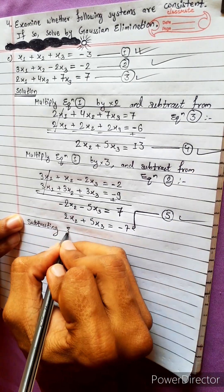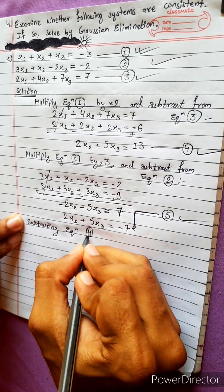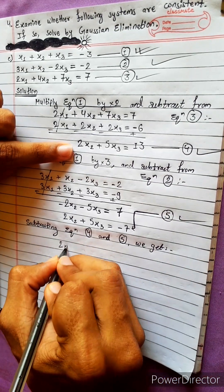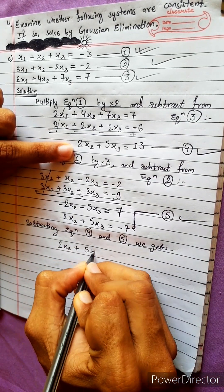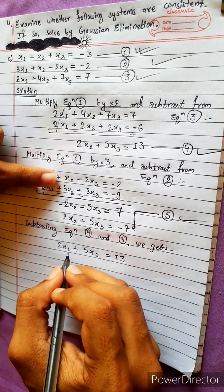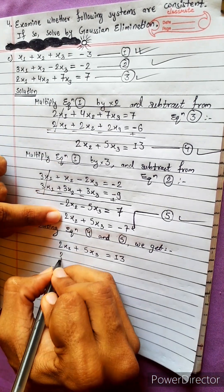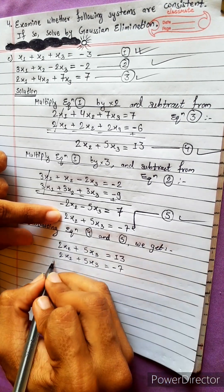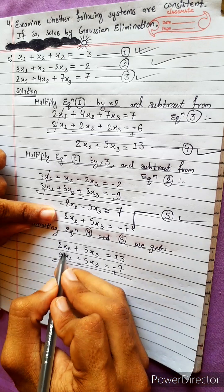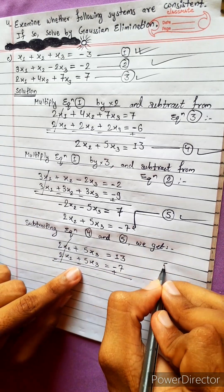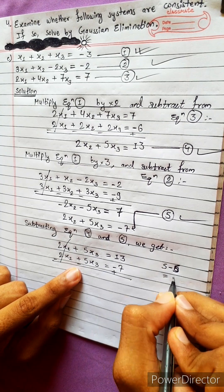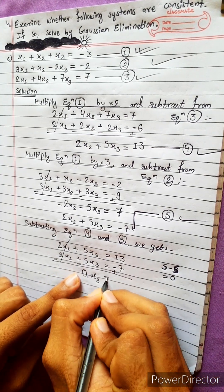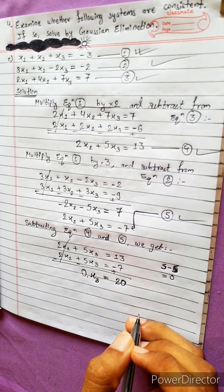Subtracting equation 4 and equation 5: equation 4 is 2x2 plus 5x3 equals 13, and equation 5 is 2x2 plus 5x3 equals minus 7. After subtraction, the x2 and x3 terms cancel, giving 0x3 equals 20.